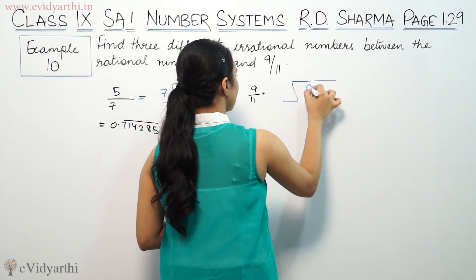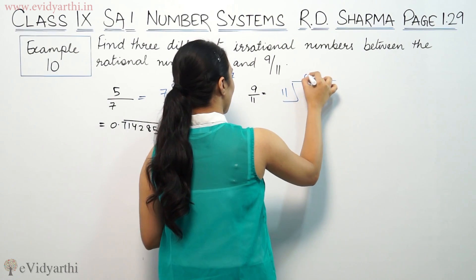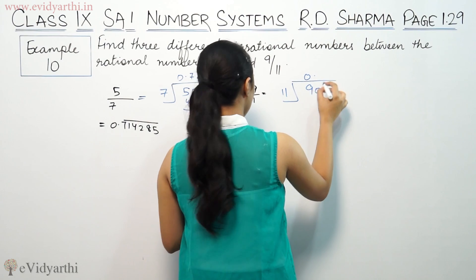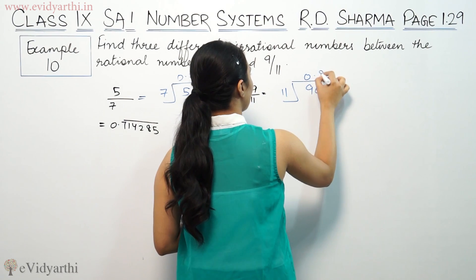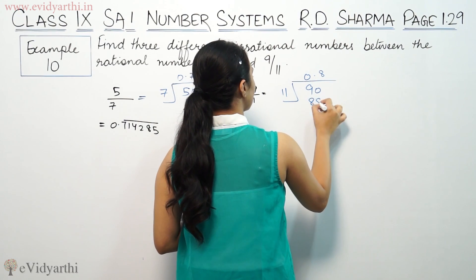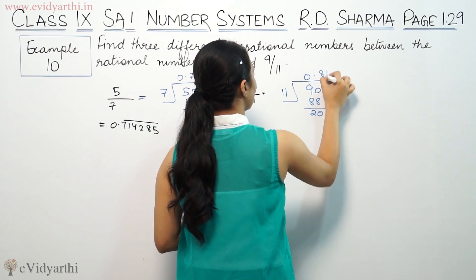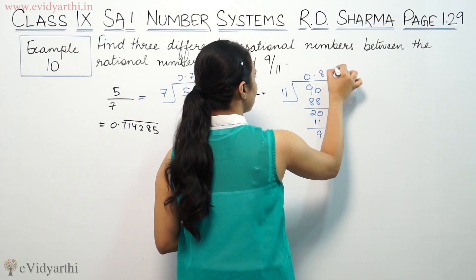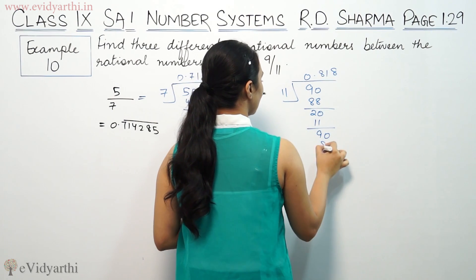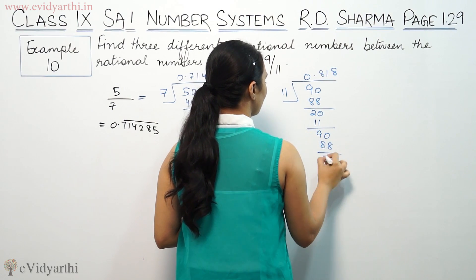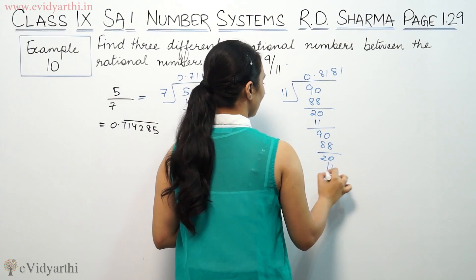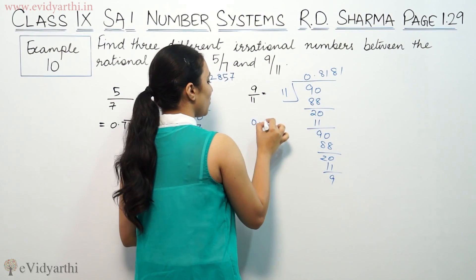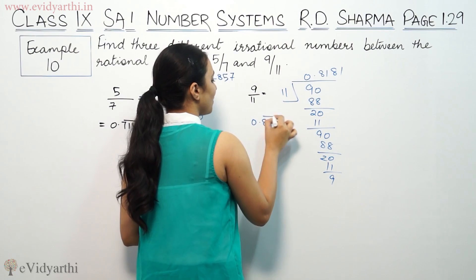Now for 9 by 11: suppose this is 9 and this is 11. I put the decimal here. 11 into 90 is 88, leaving 20. 11 into 20 is 11, leaving 90 again. 11 into 88 is 88, leaving 20. So this repeats. It means 9 by 11 equals 0.8181... which is approximately 0.81.